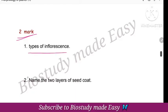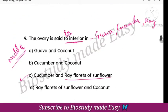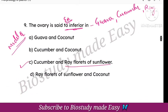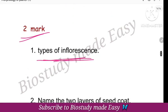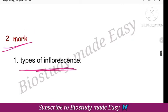Now, two-mark questions. Types of inflorescence — I will tell you all the important questions covering 1 mark, 2 mark, 3 mark, and 5 mark. Define inflorescence. The two types of inflorescence are: one is racemose inflorescence, and the other is cymose inflorescence.